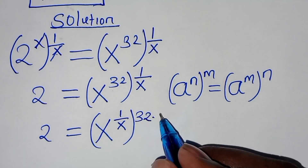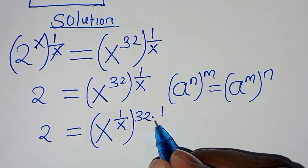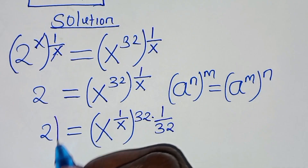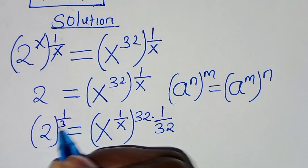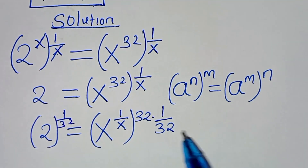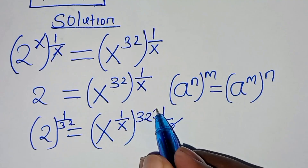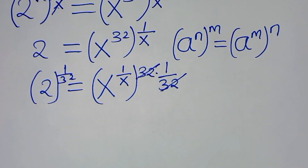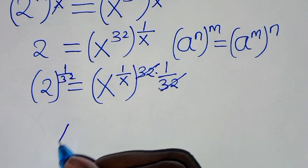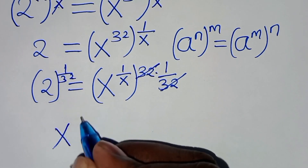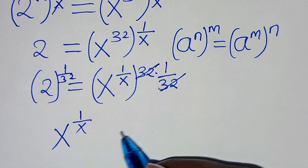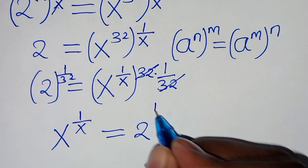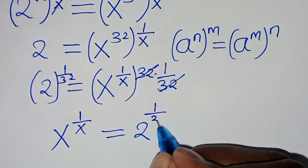The next step is to multiply both sides by 1 over 32. The 2 and 32 simplify, so we get x raised to the power 1 over x equals 2 raised to the power 1 over 32.